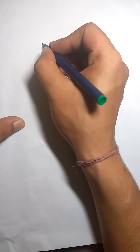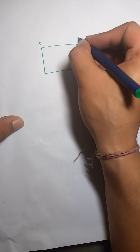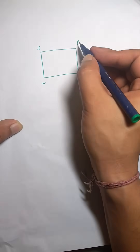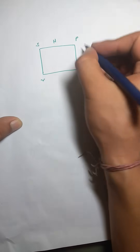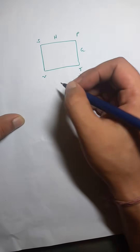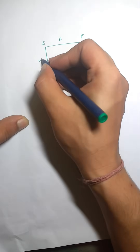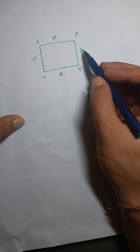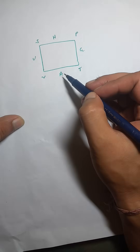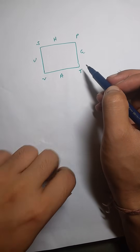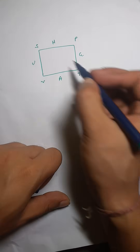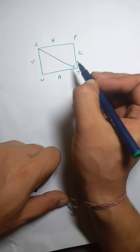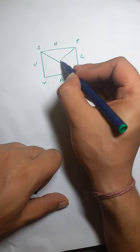We write entropy S, pressure P, volume V, and temperature T at the corners of the square. In between S and P we write H, then G, A, and U. U is internal energy, H is the enthalpy, G is the Gibbs energy, and A is the Helmholtz function. Then we draw an arrow from S to T and another from P to V.